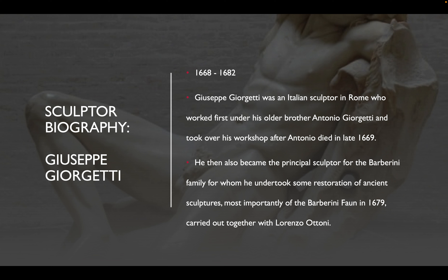Now we'll talk about the sculptor Giuseppe Giorgetti and a little bit of his life. He was born in 1668 and sadly passed away in 1682. Giuseppe Giorgetti was an Italian sculptor in Rome who worked first under his older brother Antonio Giorgetti, and took over his workshop after Antonio died in late 1669. He then became the principal sculptor for the Barberini family, undertaking some restoration of ancient sculptures — most importantly of the Barberini Fawn in 1679 — together with Lorenzo Attani.